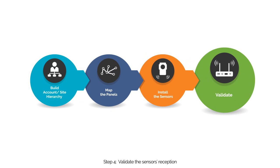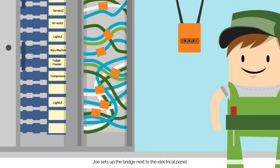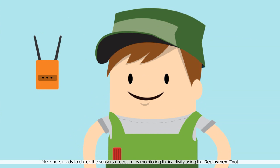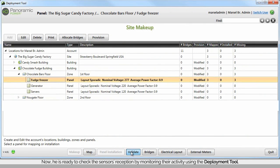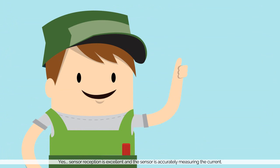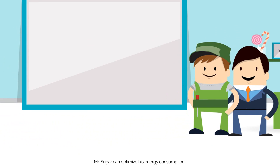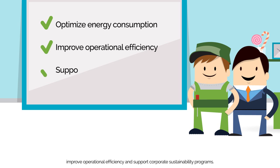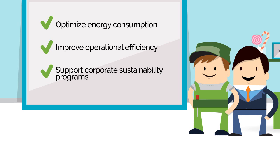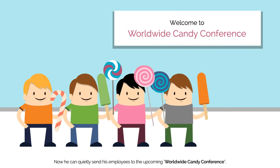Step 4: Validate the sensor's reception. Joe sets up the bridge next to the electrical panel. Now he is ready to check the sensor's reception by monitoring their activity using the deployment tool. Sensor reception is excellent, and the sensor is accurately measuring the current. After a quick configuration process, Mr. Sugar can optimize his energy consumption, improve operational efficiency, and support corporate sustainability programs. Now, he can confidently send his employees to the upcoming Worldwide Candy Conference.